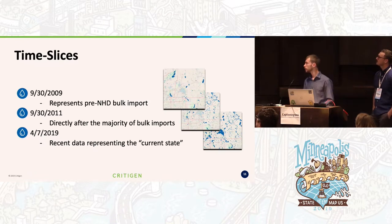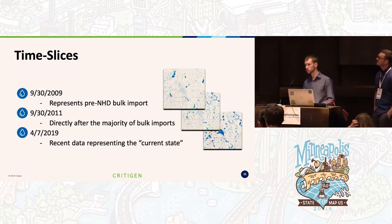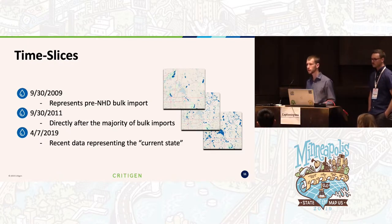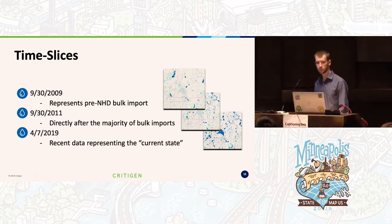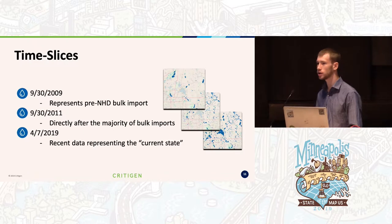After defining water, we needed to get NHD data out of the OSM dataset. We did this by creating what we're calling time slices — snapshots in the historical OSM dataset at specific points in time. We went with three: one for 2009, before there were really any water bulk imports; one for 2011, after most of the NHD data had been imported for the first time; and then a 2019 dataset as our current data.